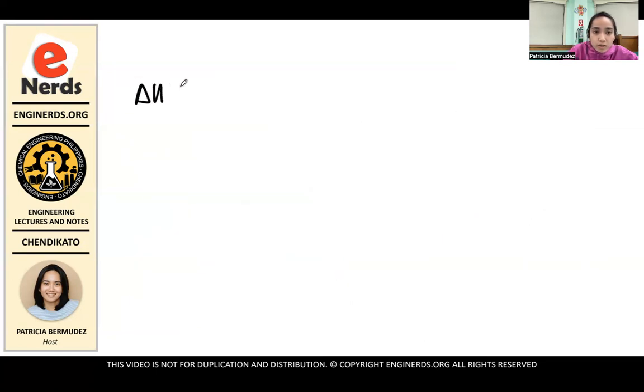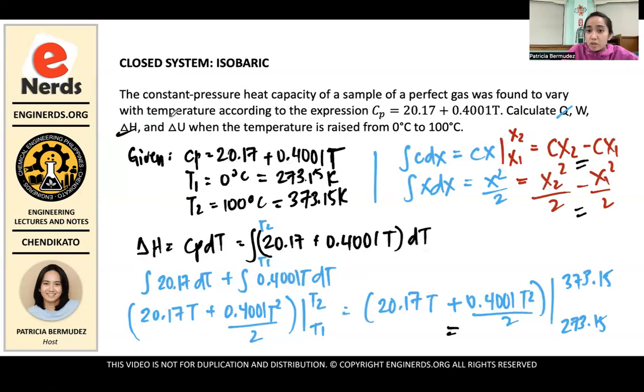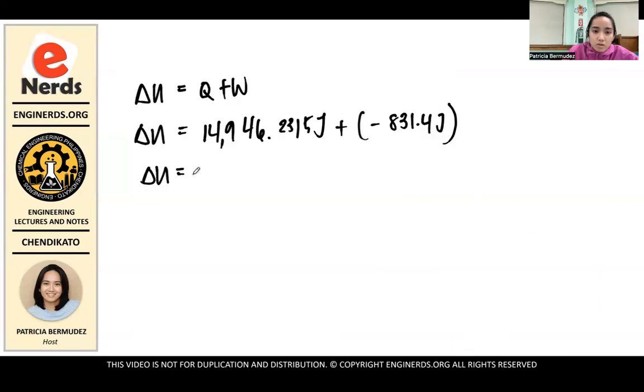So lastly, we have delta U. So we know that delta U is equals to Q plus W. And delta U then becomes, Q is 14,946.2315 joules. Plus, the work is negative 831.4 joules. Per mole. Let's just assume per mole. Or let's just assume one mole in this case. So delta U. Doesn't really matter. Especially when your problem didn't specify how much mole is in that. You can just assume one mole. So the answer would be 14,114.8315 joules. Or joules per mole. It doesn't matter. That's the value.